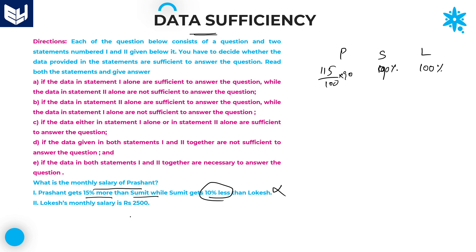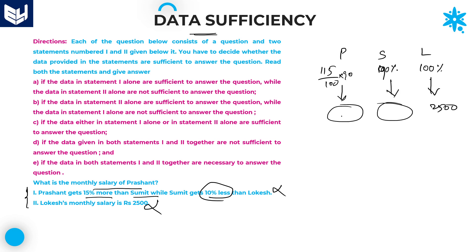Lokesh's salary is given in the second statement. If Lokesh's salary is given, how can you find Prasanth's salary using only the second statement? By using the second statement alone, that is not possible. But if you combine both the first and second statements, the 100% value of Lokesh is given, so definitely you can calculate Prasanth's value. It is easy to calculate once you know either Sumit's or Lokesh's value.